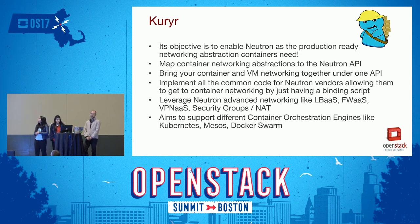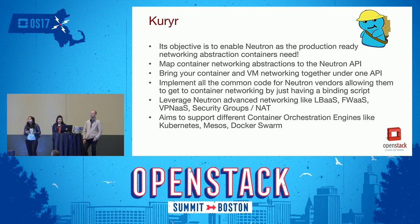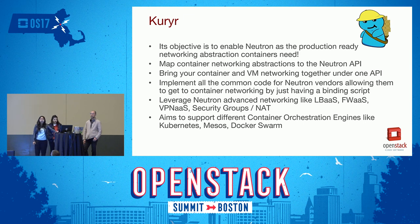The next project is Kuryr, which provides networking for container resources. It uses the Neutron API to provide the same resources that are available for VMs. If you provide the driver as Kuryr in Docker, Kuryr will talk to Neutron to provide all those resources. You can then have your containers and VMs on the same network, allowing containers to talk to VMs within the OpenStack ecosystem — enabling communication between a container, a VM, and a bare-metal node.